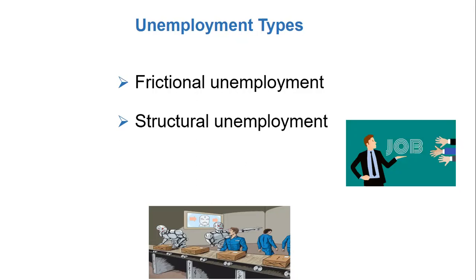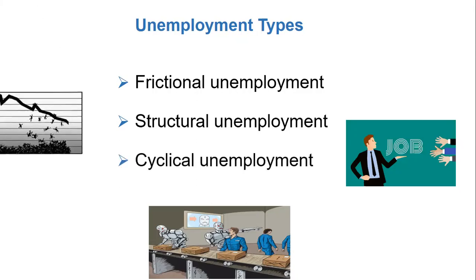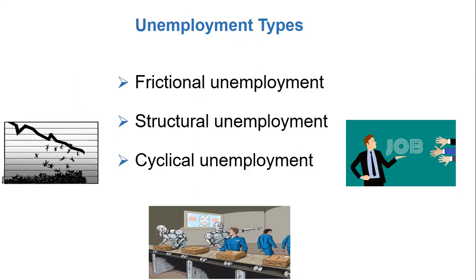The third type of unemployment is cyclical unemployment. It is unemployment that is above frictional and structural unemployment, and it is the main cause of high unemployment rates. It is caused by a downturn in the business cycle and is part of the natural rise and fall of economic growth that occurs over time. When consumer demand for goods and services drops, it leads to a reduction in production, and thus a lower need for workers, which causes layoffs.